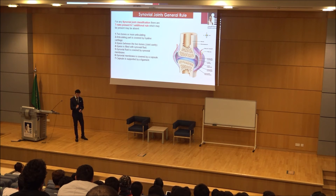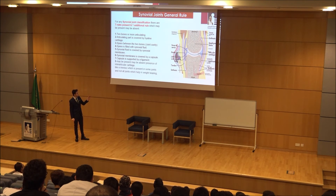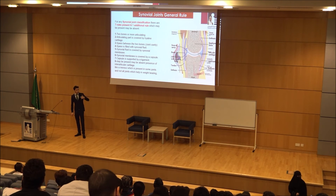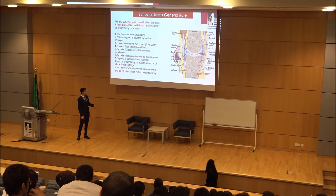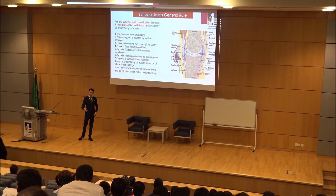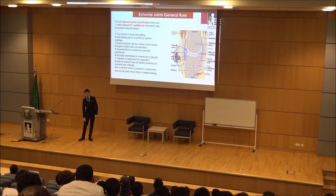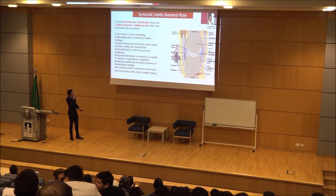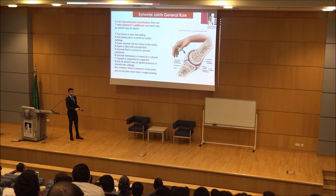The eighth rule — present in some synovial joints but not all — is the presence of interarticular cartilage. 'Inter' means between, and articular means related to the joint. For example, in your elbow you don't have it, but in your knee you do. The interarticular cartilage in the knee is the menisci — C-shaped fibrocartilage. That is the general rule for any synovial joint.